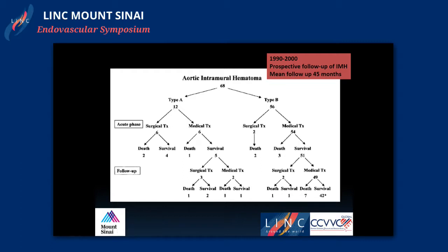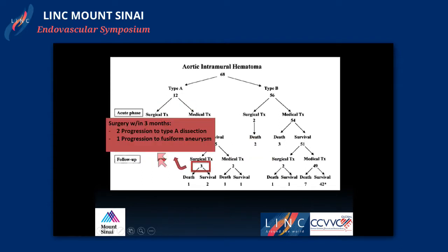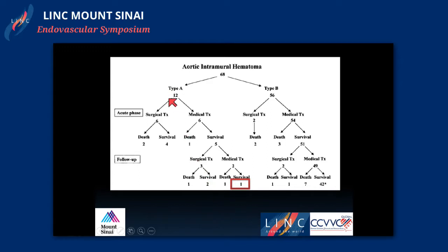Another study prospectively followed patients with intramural hematomas over a mean follow-up of 45 months — 68 total: 12 type A (ascending) and 56 type B. About half the type A patients required surgical repair in the acute phase, while only two of the 56 type B went on to surgery. Both type B surgical patients died, and two of six type A surgical patients died. Of the type A patients observed, three out of five progressed to early surgery within three months — two due to progression to type A dissection and one to fusiform aneurysm — and overall only one type A patient survived long-term, in contrast to 42 of 56 type B patients.